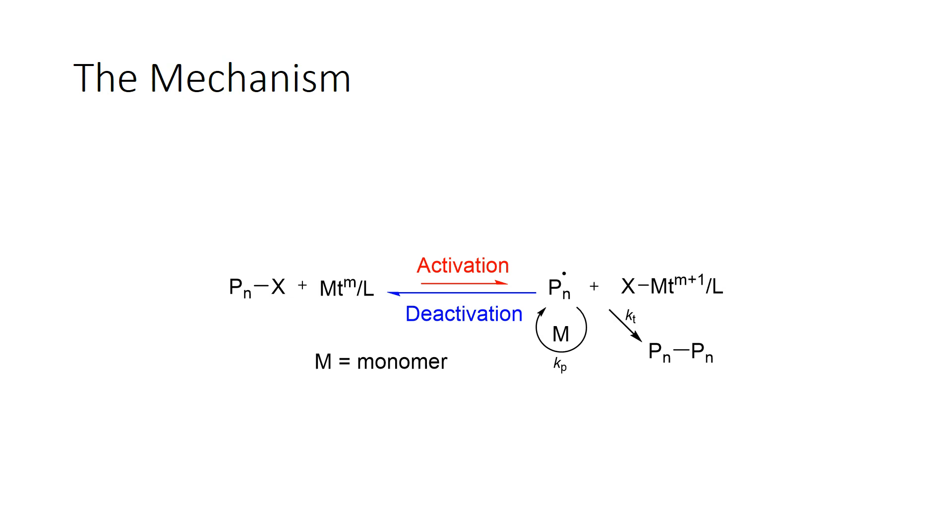The propagating radical is the reactive species with this reaction that can now react with monomer as depicted here by M. And it can continuously add more and more monomers to it. And this is the desired reaction what we want.